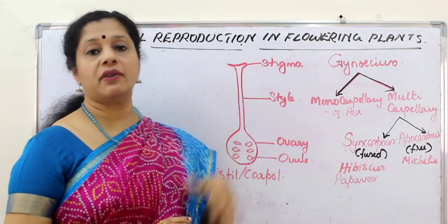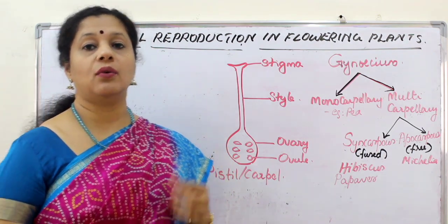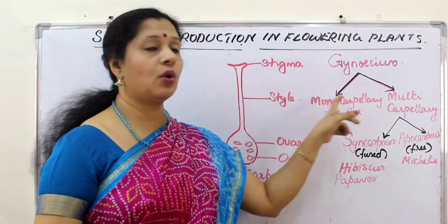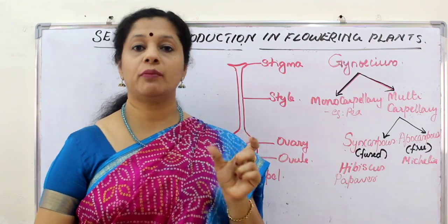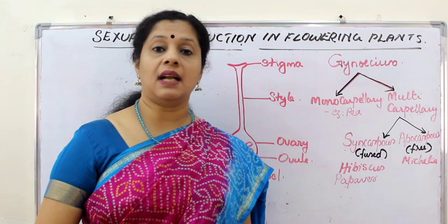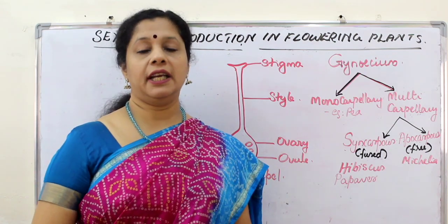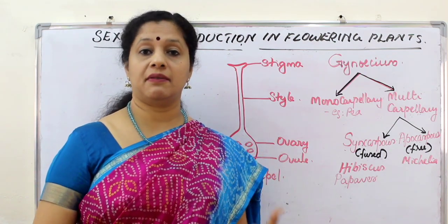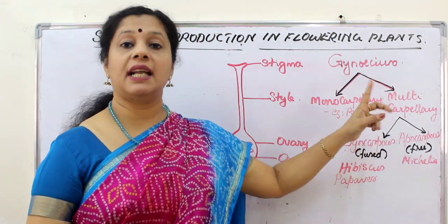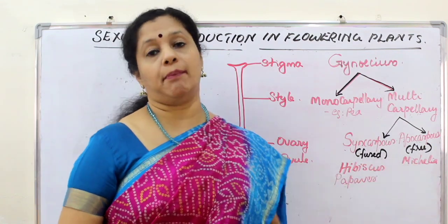When we come to the types of gynoecium, some gynoecium can have only one carpal — that condition is called monocarpillary. Mono means only one carpal, for example the pea plant. In certain other plants many carpals may be present, especially in dicots where it may be five or more. This multicarpillary condition can again be of two types: syncarpous or apocarpous.